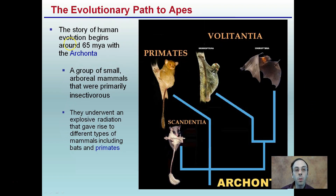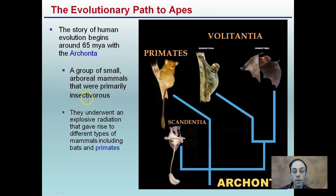The story of human evolution begins around 65 million years ago with the Archonta. It's a small group of arboreal animals that were primarily insectivores — they fed on insects. They underwent an explosive radiation that gave rise to different types of mammals, including bats and primates.